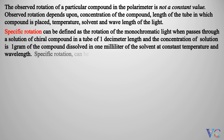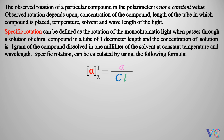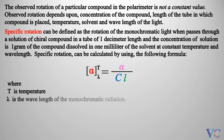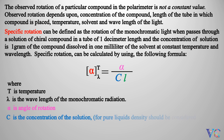Specific rotation can be calculated by using the following formula. Where D is the temperature, lambda is the wavelength of the monochromatic radiation, alpha is the angle of rotation, C is the concentration of the solution — for pure liquids, density should be considered — and L is the length of the tube.